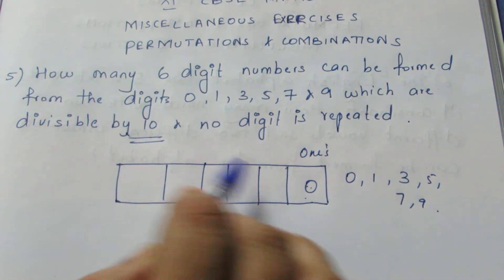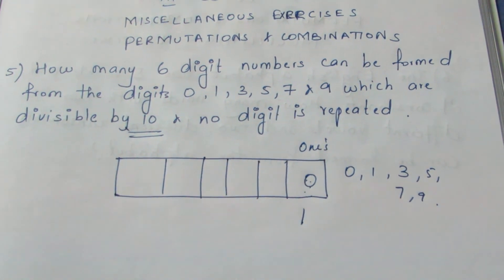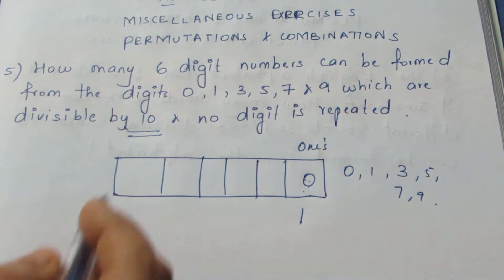So first take the condition here. The condition is divisible by 10. I am writing 0 here. So it is only one possible way of filling the ones place. Now we will move on to this place.